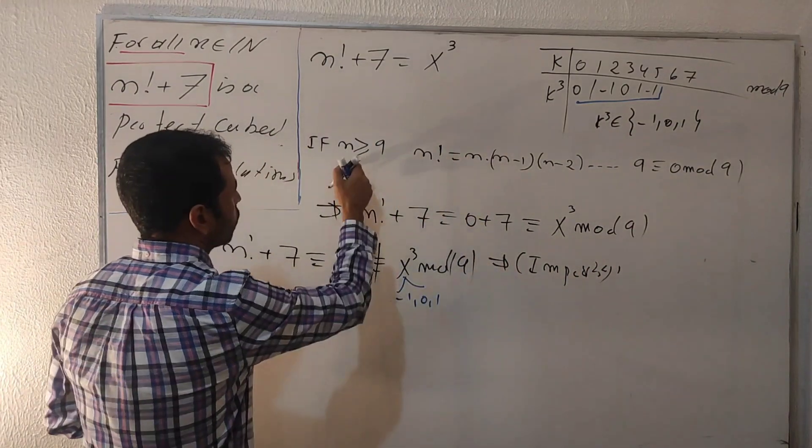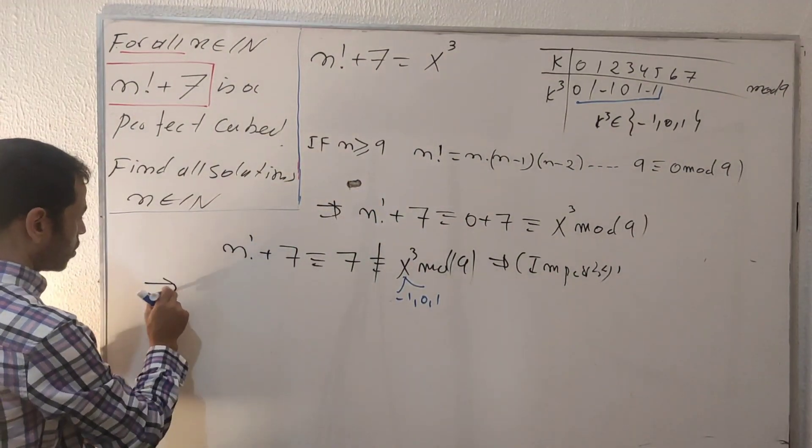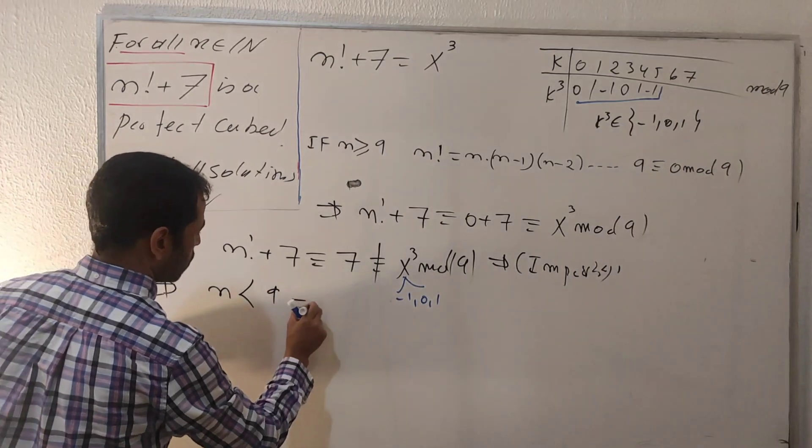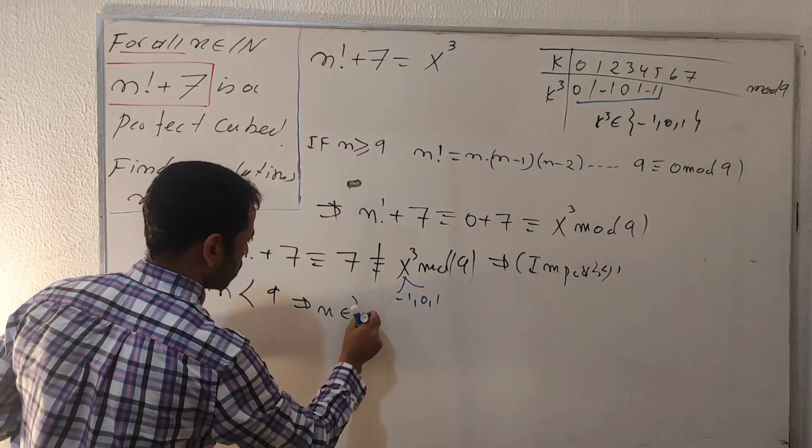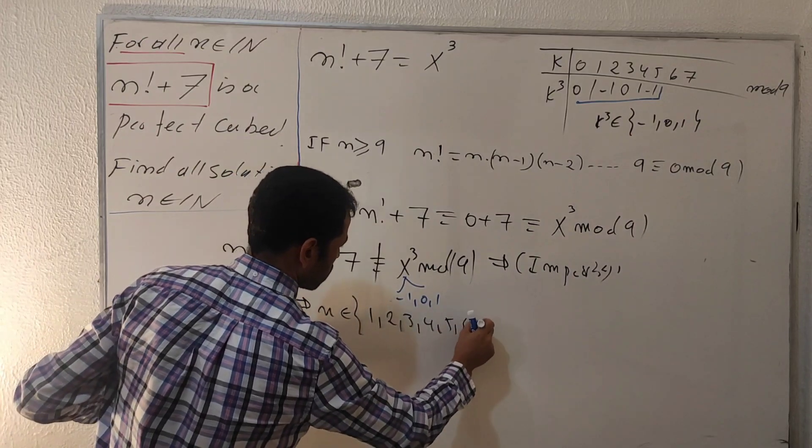We have no solutions for n greater or equal to nine. Thus n must be strictly less than nine, which means n is going to be in this set: one, two, three, four, five, six, seven, and eight.